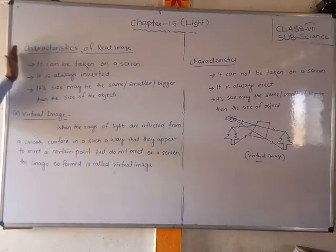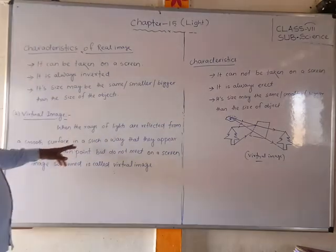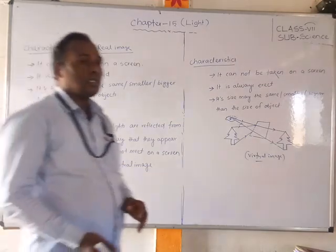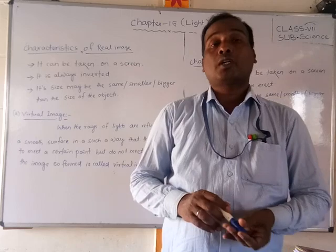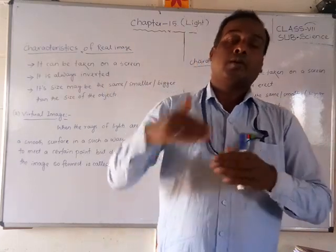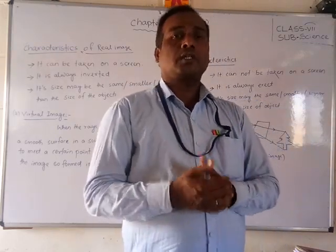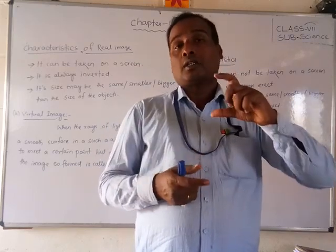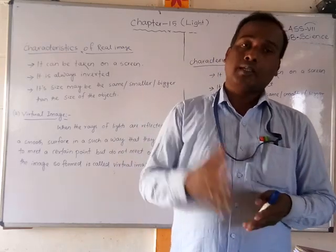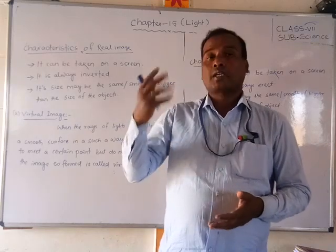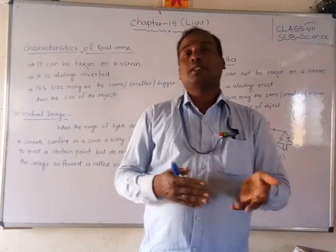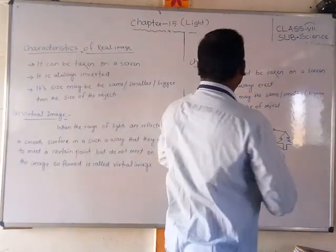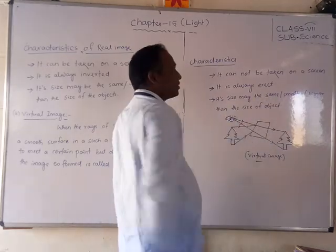Now let us discuss the virtual image. When rays of light are reflected from a smooth surface in such a way that they appear to meet at a certain point but do not actually meet on a screen, the image formed is called a virtual image. The characteristics of a virtual image are: it cannot be captured on a screen; it is always erect; and its size may be equal to, smaller than, or larger than the object.